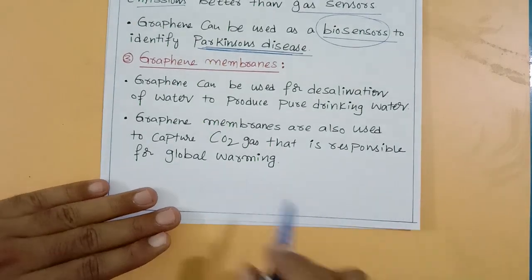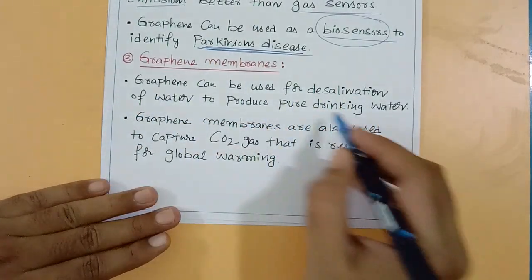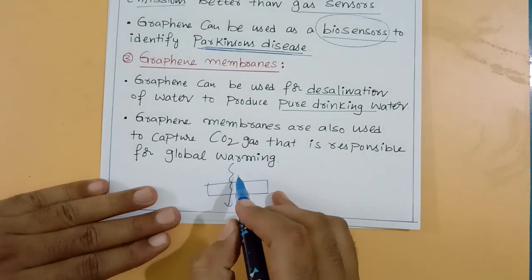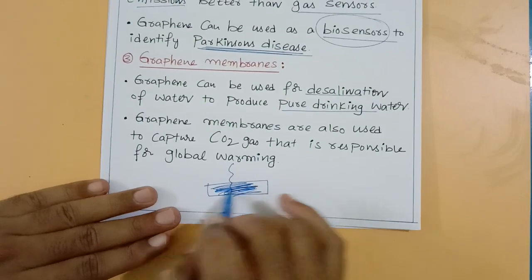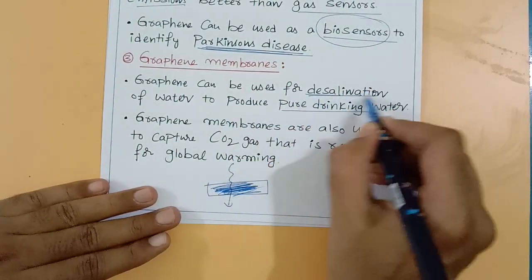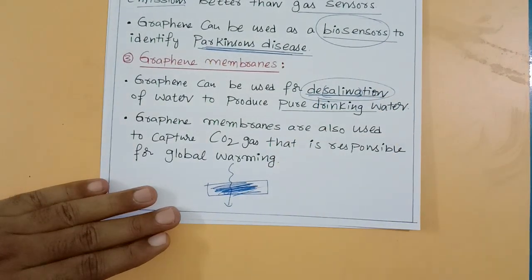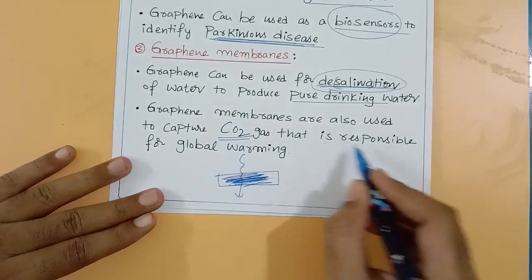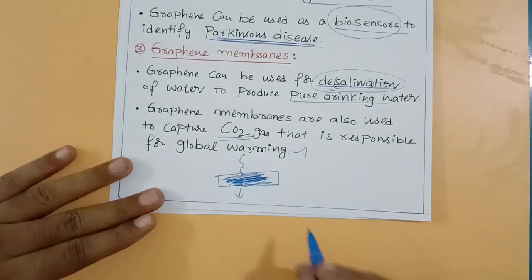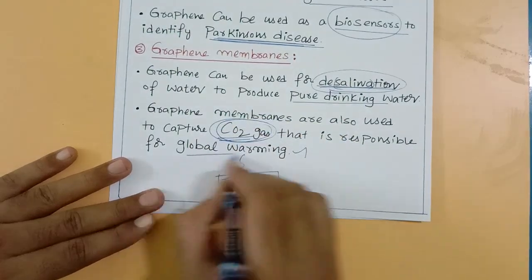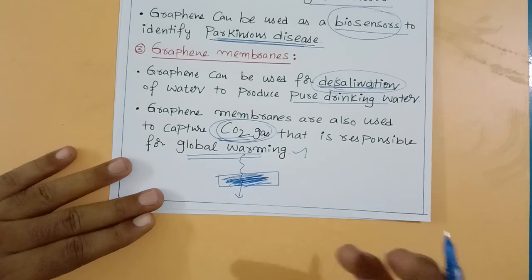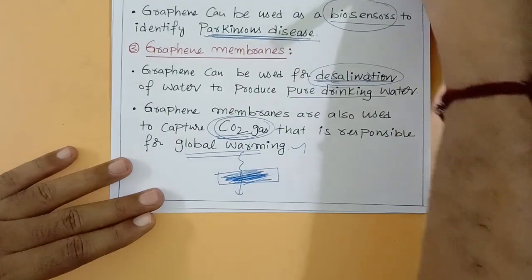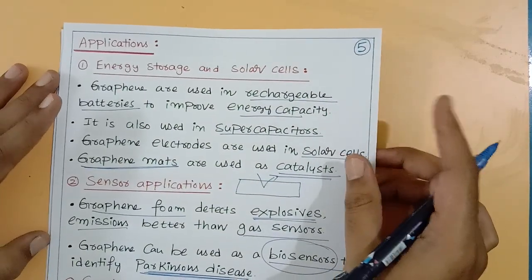Third application — graphene membranes: graphene can be used for desalination of water to produce pure drinking water. Water is passed through a graphene sheet membrane; water molecules pass through while salty impurities remain behind. Graphene membranes are also used to capture carbon dioxide gas that is responsible for global warming, blocking CO2 emissions from automobiles before they reach the atmosphere.